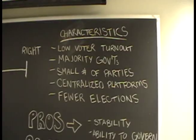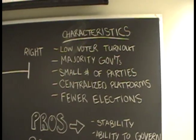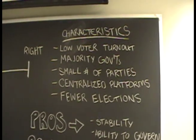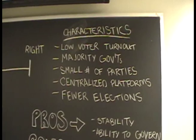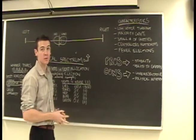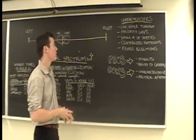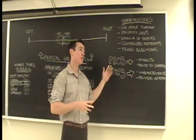Which goes to the third part. There are a small number of parties out there. There's also a lot of centralized platforms, as we discussed earlier, trying to capture as many votes as possible. You centralize your platform to appeal to as many people as possible. And fewer elections.